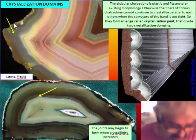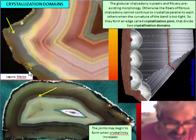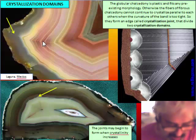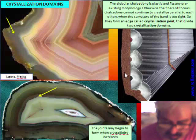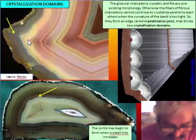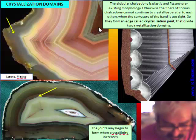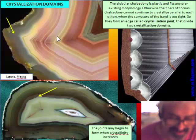For example, in this case we see that the angle is around 90 degrees. The globular chalcedony, which is transparent, has no problem. But when the white portion — which is fibrous chalcedony — starts to crystallize, we have a line: a joint dividing two crystallization domains. We can have another joint here. The joint is a contact between two orientations of the fiber. When the orientation of the fiber is broken at a point, this can continue until the center of the nodule, or can stop when the crystallinity changes.